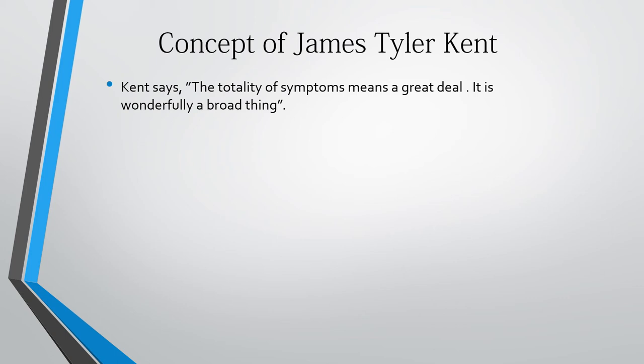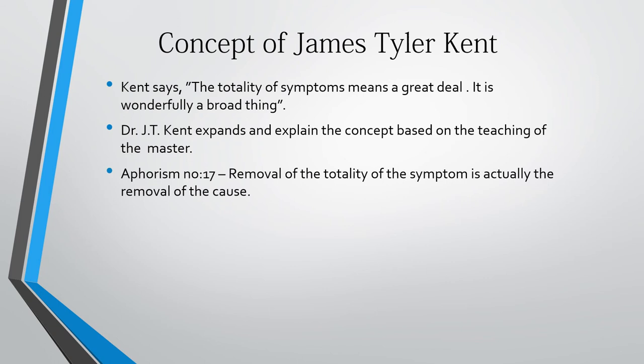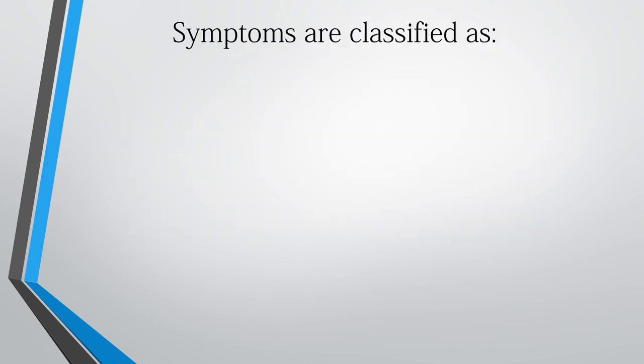Regarding the concept of James Tyler Kent: Kent says the totality of symptoms means a great deal — it is a wonderfully broad thing. Dr. J.T. Kent expands and explains the concept based on the teaching of the master. In Aphorism 17, removal of the totality of symptoms is actually the removal of the cause. If the causes are not removed from beginning to end, the disease can reproduce itself — the totality cannot be removed without removing the cause.